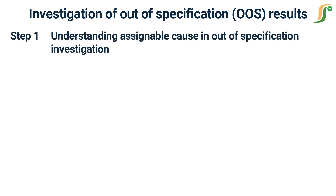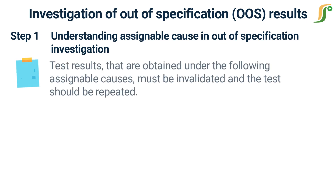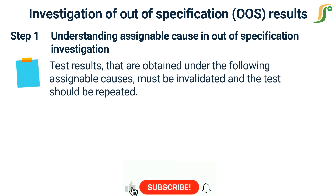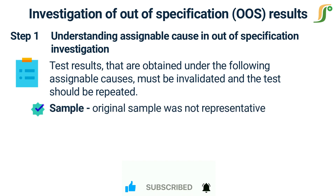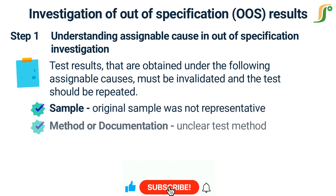Step 1: Understanding assignable cause in out-of-specification investigation. Before diving into conducting an out-of-specification investigation, you should understand what assignable causes are and whether an assignable cause has resulted in the out-of-specification event. Test results obtained under the following assignable causes must be invalidated and the test should be repeated. First: the original sample was not representative or was insufficient in quantity.